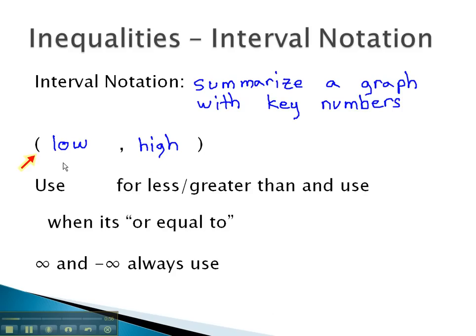Depending on the type of inequality, the parentheses might be slightly different. We use curve parentheses for less than or greater than, and we use square parentheses when the inequality is greater than or equal to, or less than and equal to.